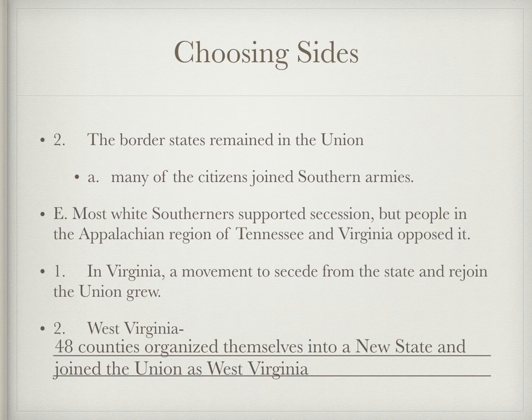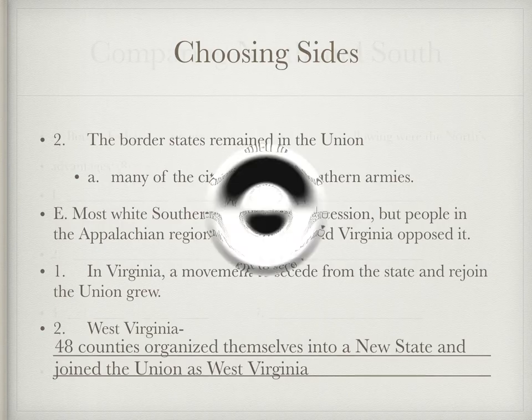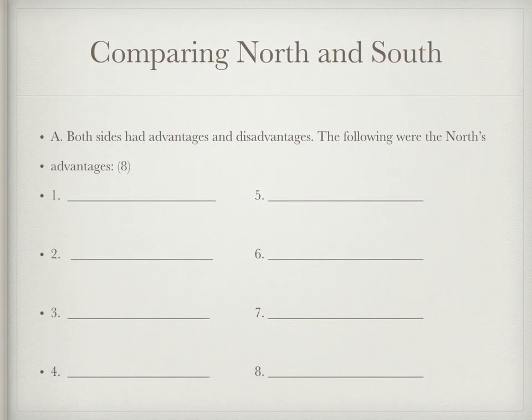West Virginia became a state faster than any other — and they kind of took a play out of the Confederate States' playbook. On paper, the North was definitely the favorite to win this war. They had everything going for them. The South was definitely the underdog. Let's talk about eight northern advantages.